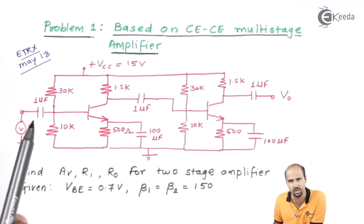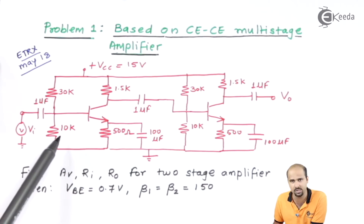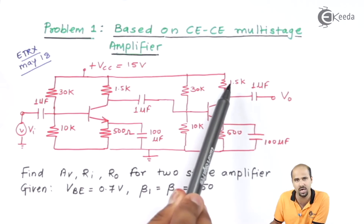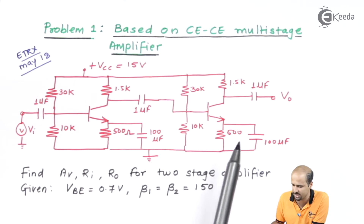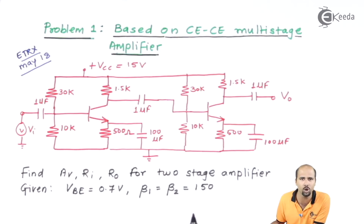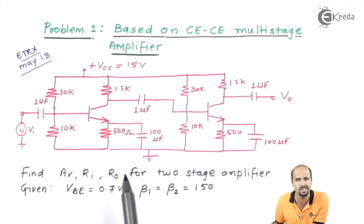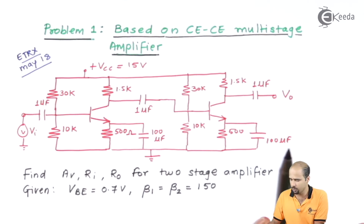If you look at this particular circuit carefully, we can observe that R1 and R2 are 30k and 10k for both stages. RC and RE are 1.5k and 500 ohm for both stages as well. Both are of bypass capacitor type. Since both stages are identical, the DC parameters are the same. We will do DC analysis for one stage and carry those parameters forward for stage number 2.